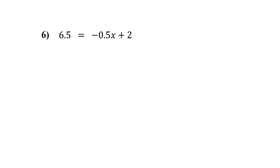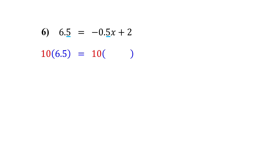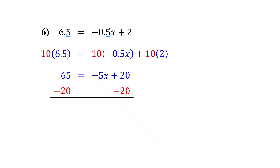Try the next one — it's similar, but this time with a negative decimal coefficient. Just follow the same steps. Both 6.5 and negative 0.5 have one digit after the decimal point, so to clear the decimals, multiply every term by 10. That moves the decimal point one place to the right. Next, subtract 20 from both sides to isolate the variable term. On the right, the 20s cancel out, leaving negative 5x. On the left, we get 45. Now get x by itself by dividing both sides by negative 5. On the right, the negative 5s cancel, leaving x. On the left, we get negative 9.